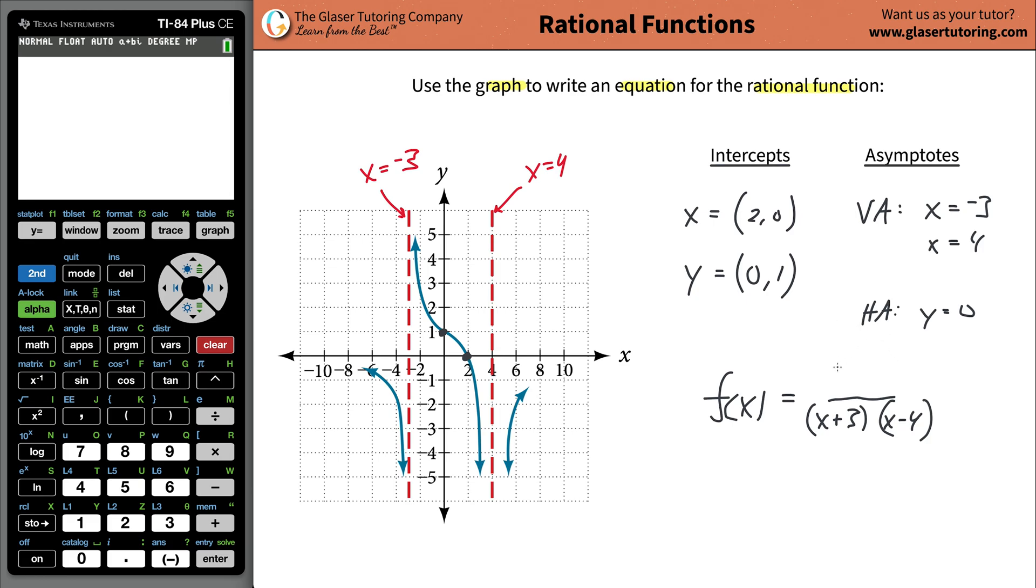We're going to treat the x-intercept similarly to how we treated the vertical asymptotes, except it's in the numerator. I need a zero value in the numerator when x is 2. So I'm going to do x minus 2, because that will give me a zero result if x is 2.